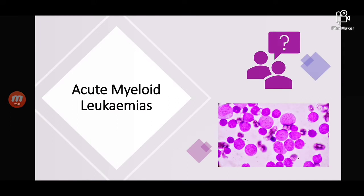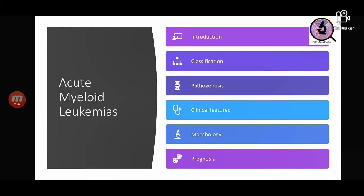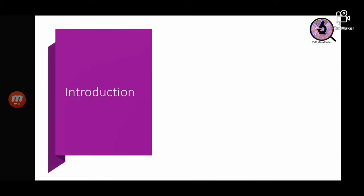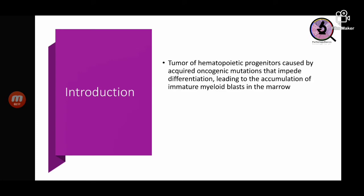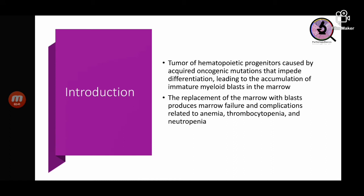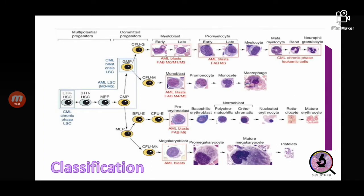We will start with acute myeloid leukemias. AMLs are tumors of the hematopoietic progenitors caused by acquired mutations, which leads to impeded differentiation. Because differentiation is impeded, there is accumulation of myeloid blasts in the marrow. The replacement of marrow with blasts causes bone marrow failure, leading to ineffective hematopoiesis — anemia, thrombocytopenia, and neutropenia due to deficiency of mature WBCs.